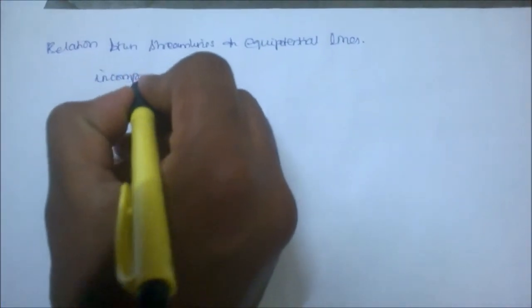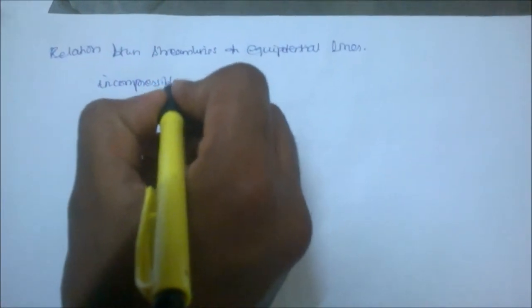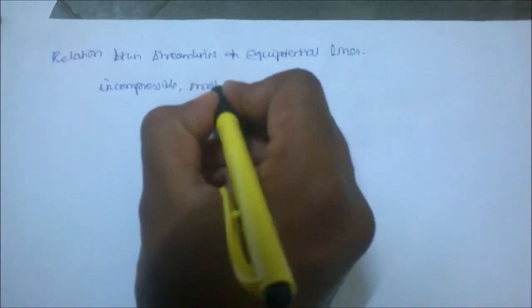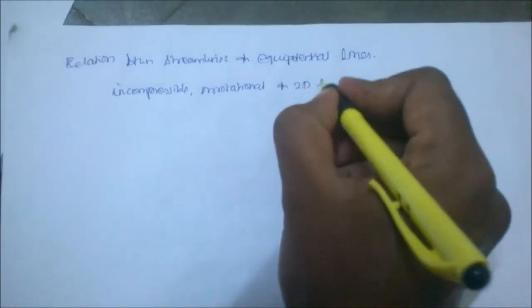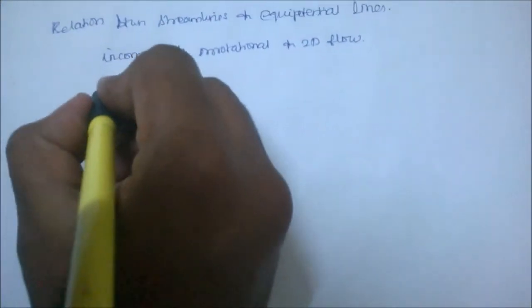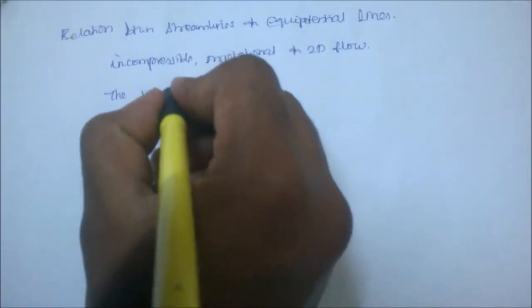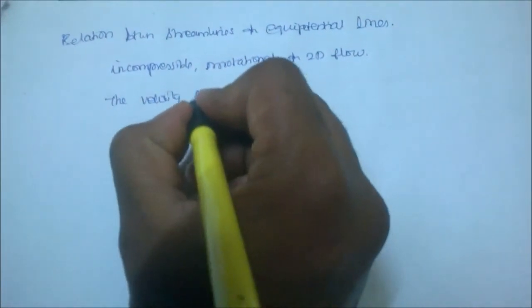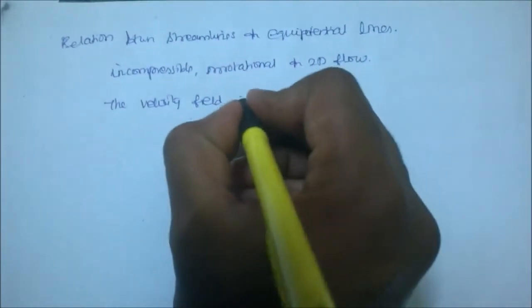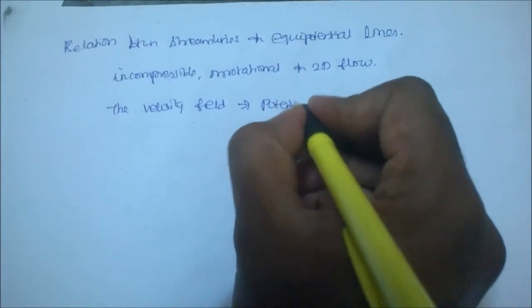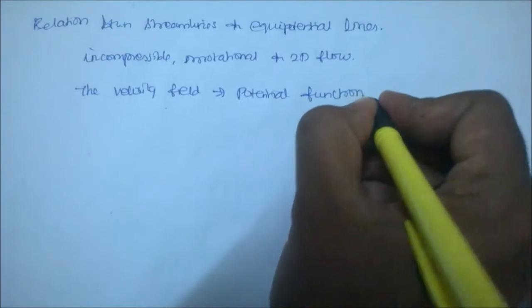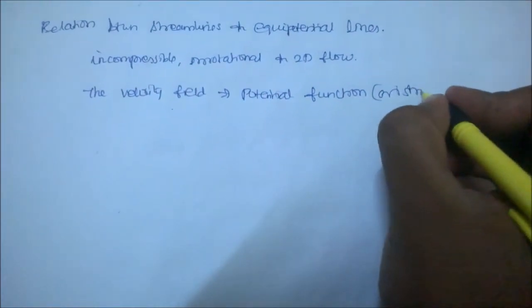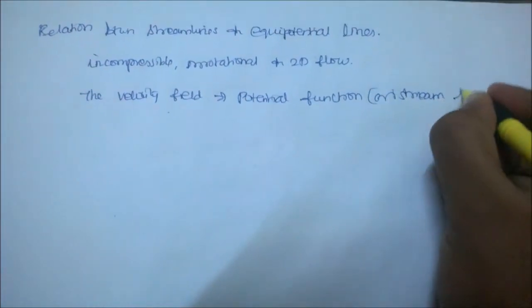Consider incompressible, irrotational 2D flow. The velocity field can be given by either a potential function or stream function.